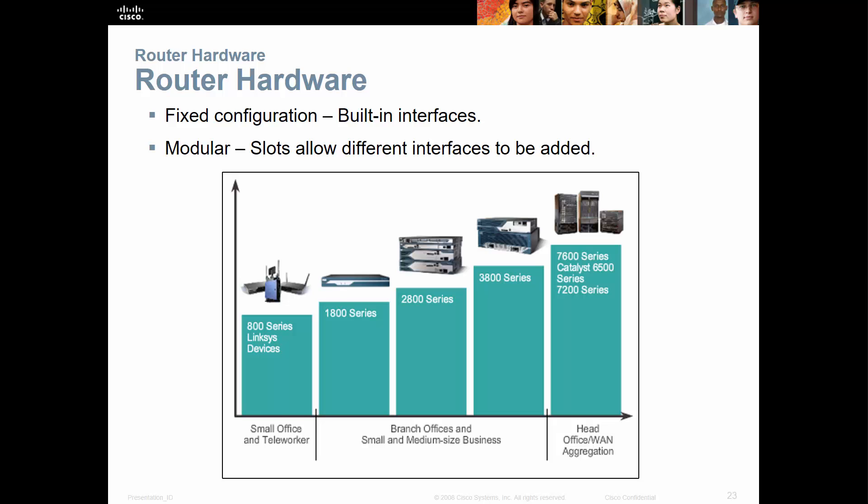Just like with switches, routers come in fixed or modular configurations. More often than not we're dealing with the 1800 and 2800 series, and as we need additional ports or features we go up to the 3800, 4800, and so forth. The 7600 and 6500 series were shown as high-end options, though they've been surpassed by newer devices like the 1900 and 2900 series. The concept remains the same.